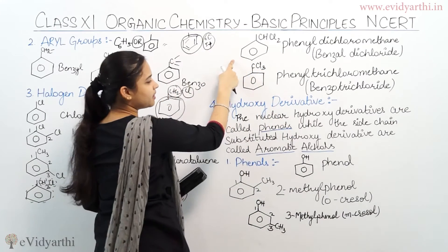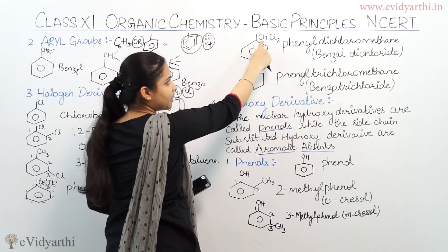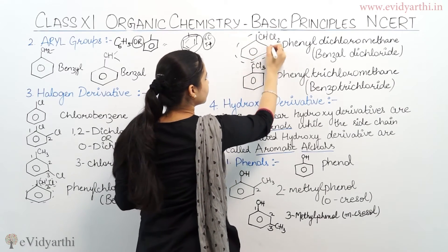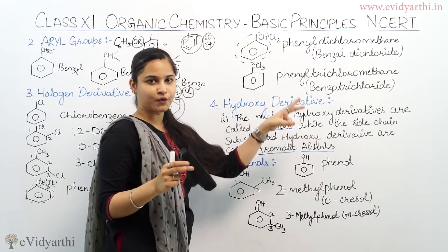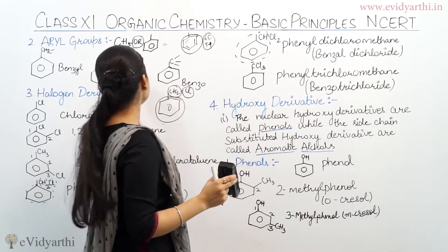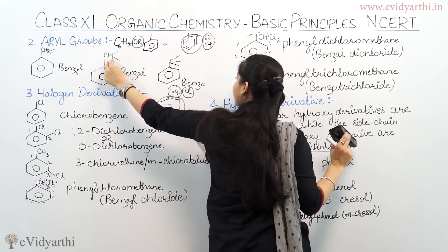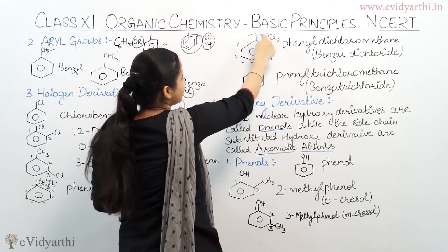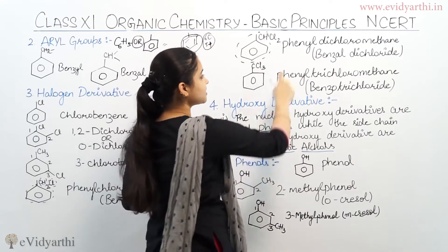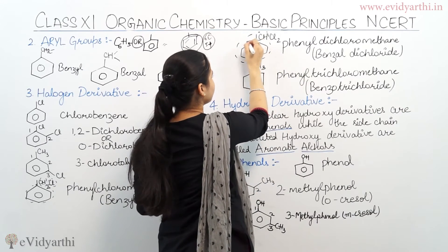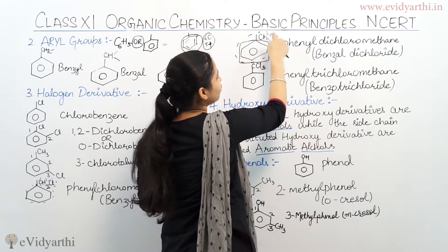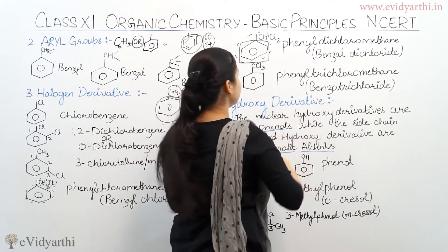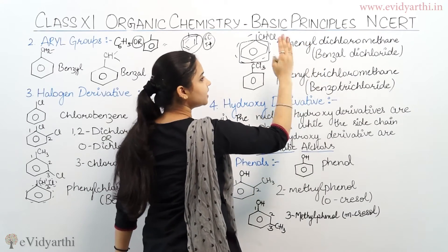Moving on to the second point. This group is benzene ring with CH2Cl2 — two chlorines on the side-chain carbon. So this group is benzal dichloride. Why? Because it has 2 chlorines present. So benzal dichloride. When I have a unit that has one hydrogen atom on carbon and two substituents, I call it benzal. Or, as phenyl dichloro methane — because one carbon atom is attached with two chlorines — I can say phenyl dichloro methane, or benzal dichloride.